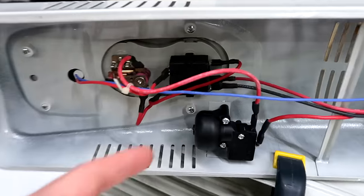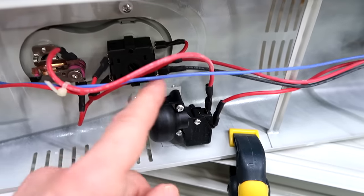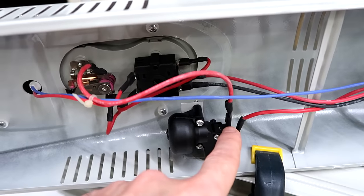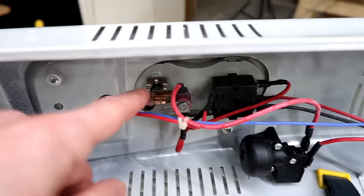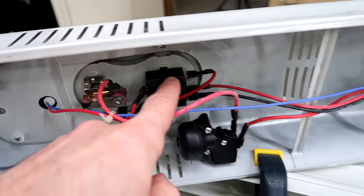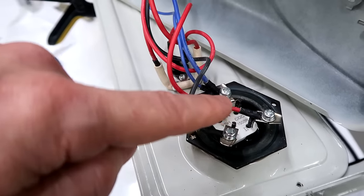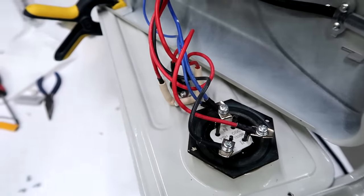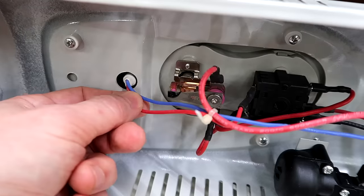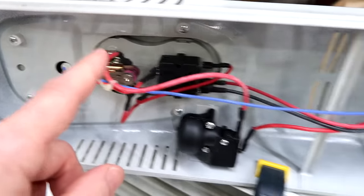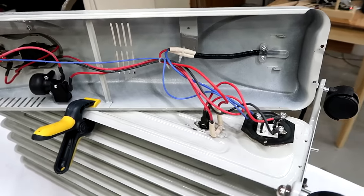And then up here, we have the tip-over protection switch. So if the heater's on its side, that cuts power. Here's the thermostat. Here's the power switch that selects. And setting one, the 650-watt element. Setting two, the 850-watt element. And setting three, both of them. And up here is the pilot light. And that's actually wired in such a way that if this switch trips, that stays on.